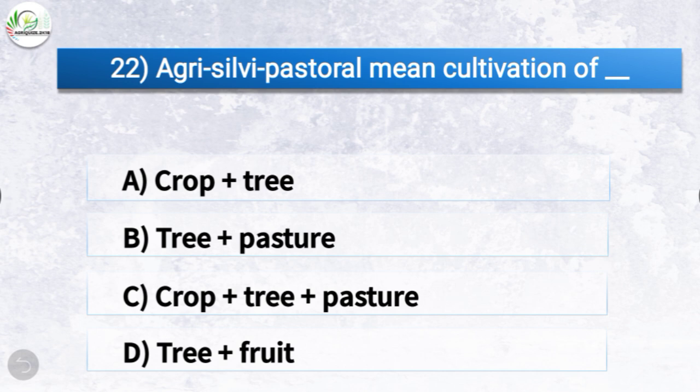Question number twenty-two: agri-silvi-pastoral means cultivation of which combination? The options are crop plus tree, tree plus pasture, crop plus tree plus pasture, or tree plus fruit. The correct answer is option C, crop plus tree plus pasture. So agri-silvi-pastoral means cultivation of crop plus tree plus pasture.